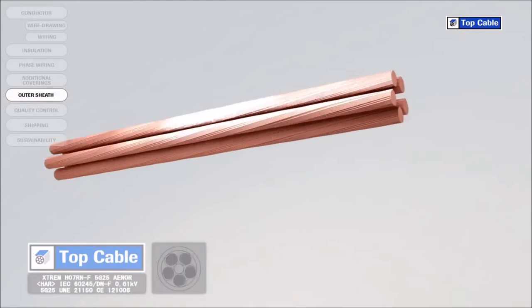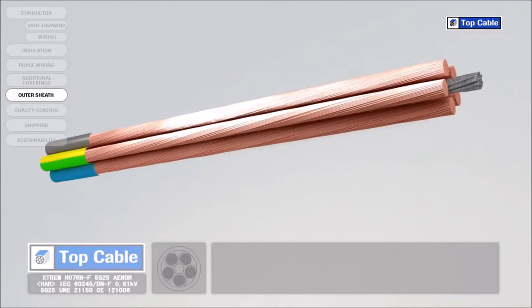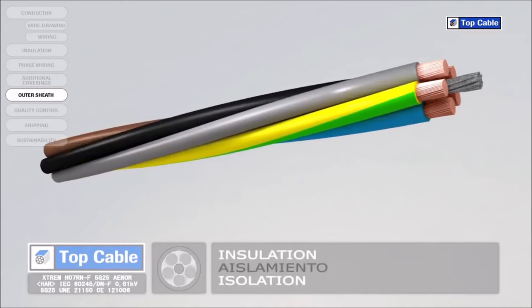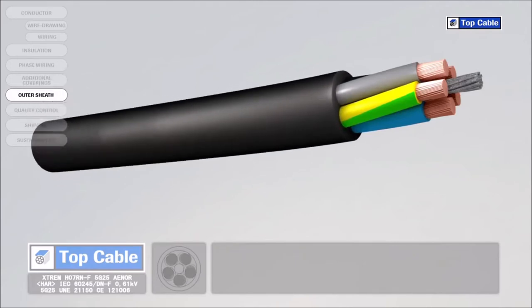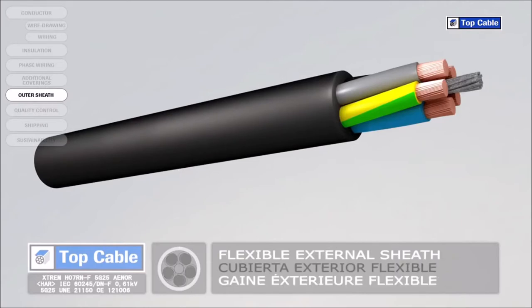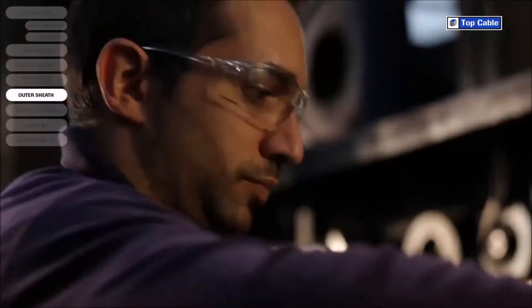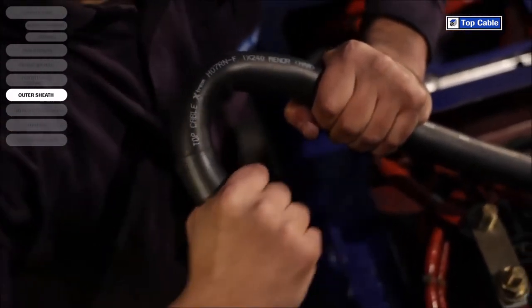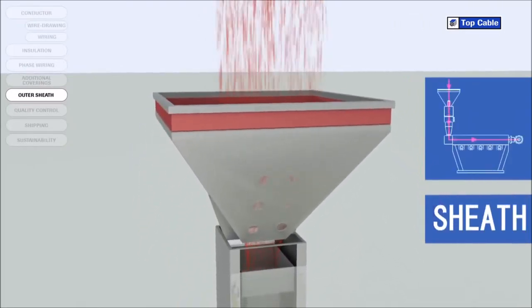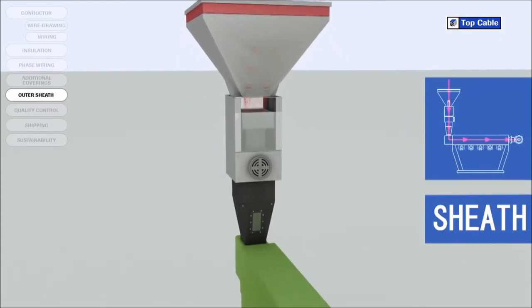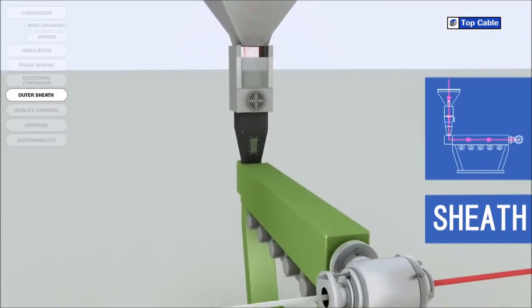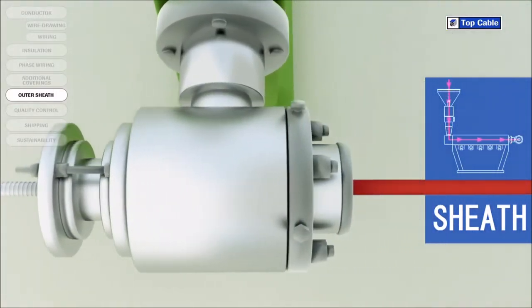Cables usually have an outer polymer covering for protection, called the outer sheath. The sheath protects the conductors and their insulation from external elements which may change their electrical properties, such as moisture. It also protects them from mechanical aggression which may occur during the installation of the cable. As with the insulation, the outer sheath can be made from a thermoplastic or a thermosetting plastic. The outer sheath is applied like the insulation via a process of extrusion at high temperature. The sheath may be made from different materials depending on the required protection level, the final flexibility of the cable, and the work environment.